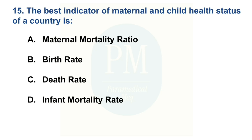The best indicator of maternal and child health status of a country is. Option A: Maternal mortality ratio. Option B: Birth rate. Option C: Death rate. Option D: Infant mortality rate. The correct option is Option A — Maternal mortality ratio.